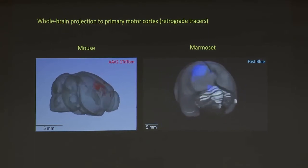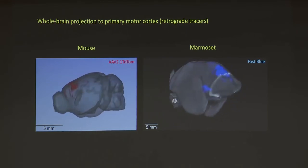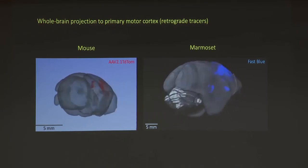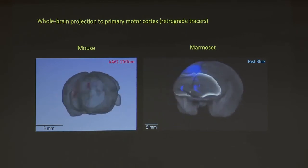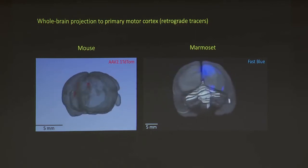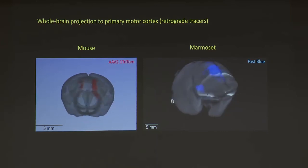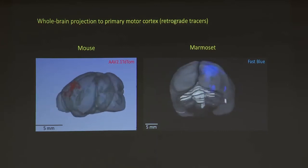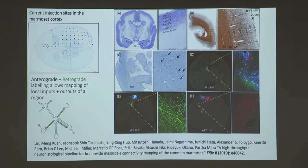One thing I have learned as a physicist working in biology is not to waste time on noisy or uncertain data, because biology is very diverse with a lot of complicated details. One really wants high-quality ground-truth data sets. It's one reason I really like neuroanatomy as a subject.